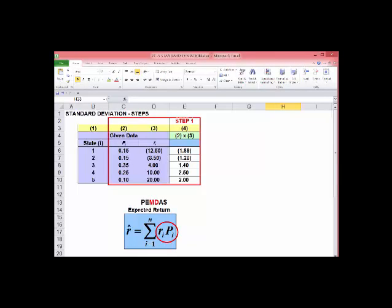Repeat that for all states of the economy. That takes care of the multiply part of the equation. Second step, add those values we just calculated. That's the summation sign, where n is the number of states of the economy, and there's our expected return, 2.75. Now we're going to start on standard deviation, and this is where order of operations is really important.